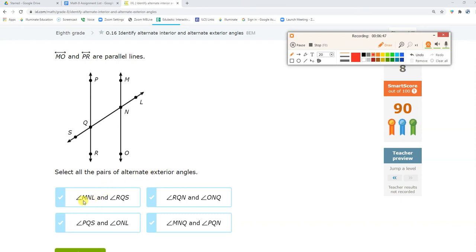Let's do one of these. Exteriors. Alternate exteriors. Angle MNL. Yes. His alternate exterior would be angle SQR. Okay, that's one of them.